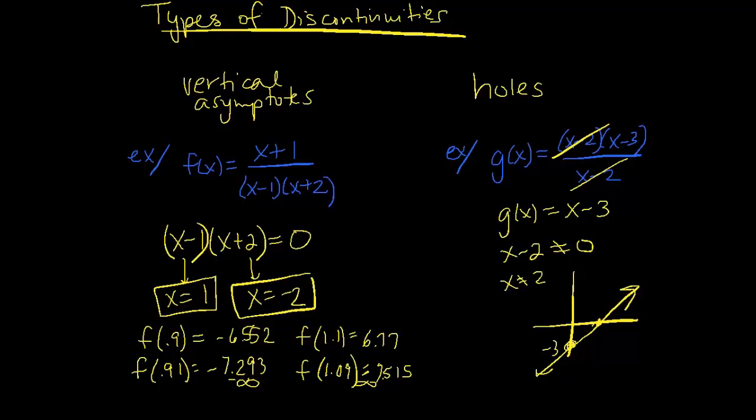So if it's not a vertical asymptote, we have a hole. So here's how we're going to find where the hole is. We know that the x value is 2. We are going to substitute 2 into our simplified function. So 2 minus 3 gets us negative 1. So there is a hole at 2 comma negative 1.